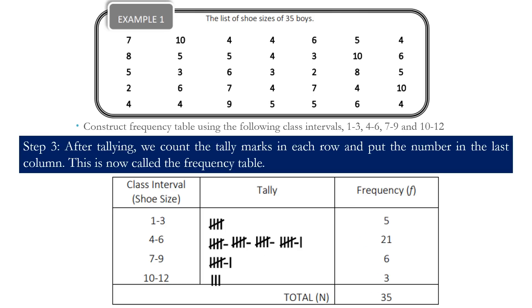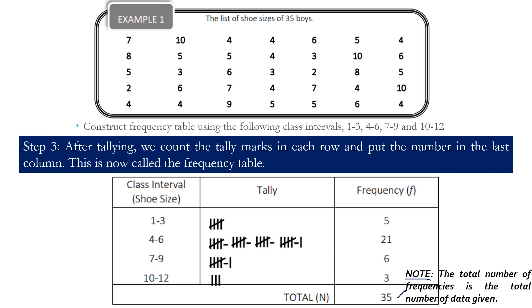Once again, here is our frequency distribution table. When we add all of the frequencies — 5 plus 21 plus 6 plus 3 — the total is 35, and we now have our frequency table for the list of shoe sizes of the 35 boys. Note that the total number of frequencies is the total number of data given. If you are constructing a frequency table and the total does not sum up to the number of data, it means you missed some data in your tallying, and you have to recheck and re-construct your table.